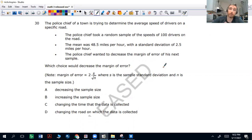The mean was 48.5 miles per hour with a standard deviation of 2.5 miles per hour. The police chief wanted to decrease the margin of error of his next sample. Which choice would decrease the margin of error?